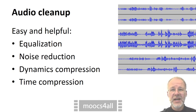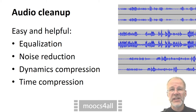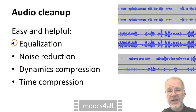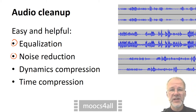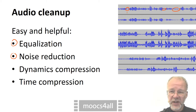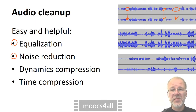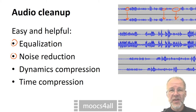The names of the techniques for cleaning up audio sound intimidating, but some are easy to use, very helpful, and are available even in video editing software that costs less than 100 euros. Equalization, best in the form of a parametric equalizer, can add more bite to muffled voices or reduce the boominess of a recording in a resonant room. If there is a constant noise — for instance power line humming or hissing from the air conditioning — this can be removed well by noise reduction.